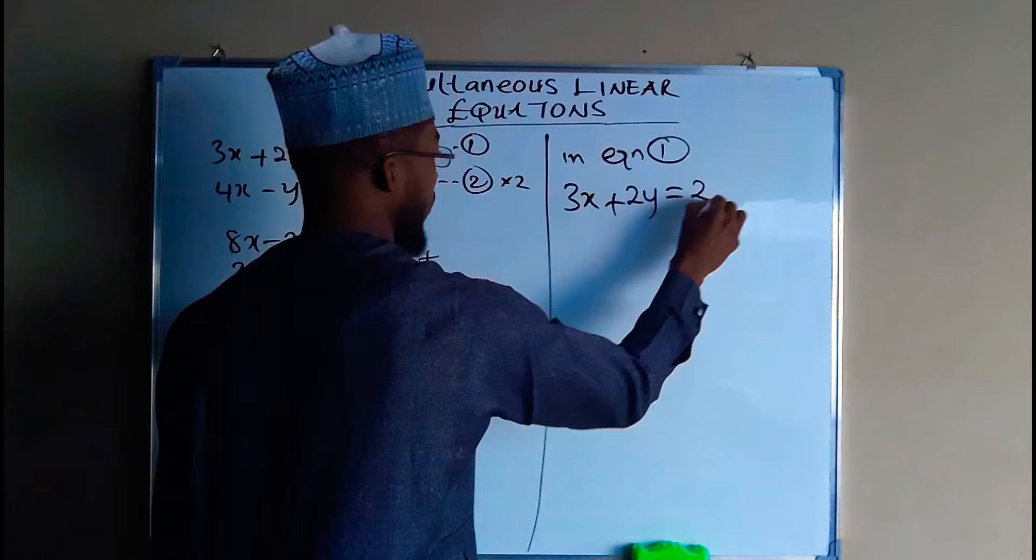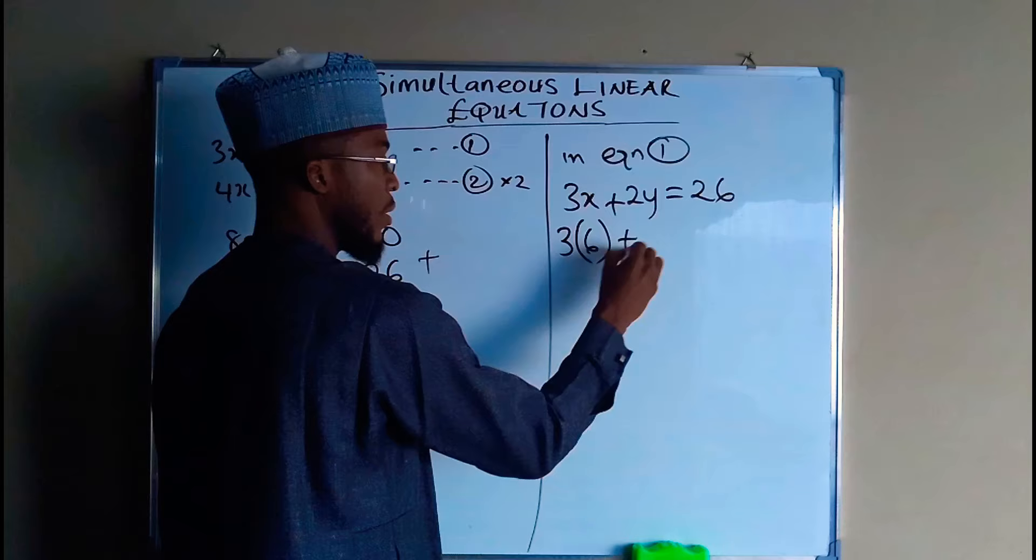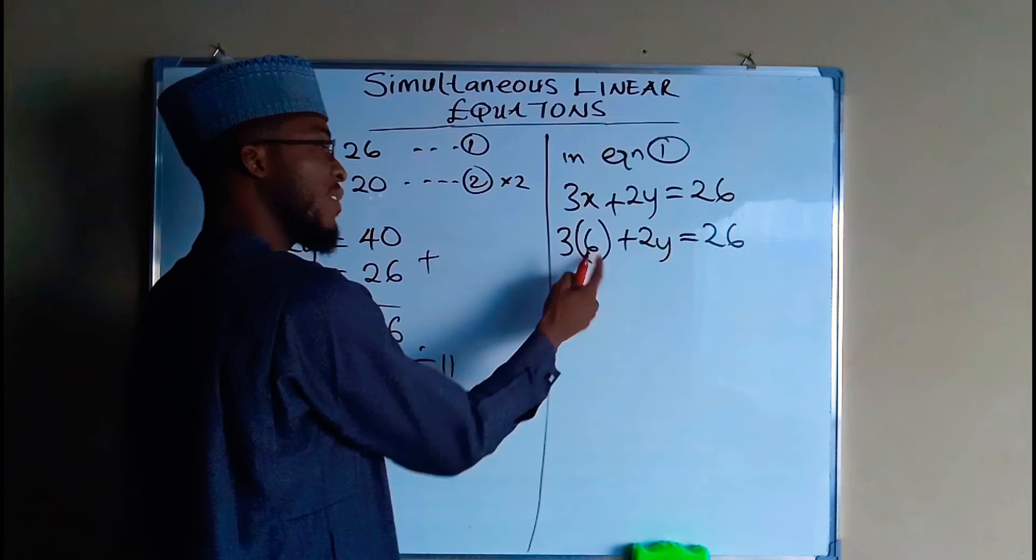But the value of x is now equal to 6, so we substitute the value of x to be equal to 6. So we have 3 multiplied by 6 plus 2y and this is equal to 26. This time this is 18 plus 2y.